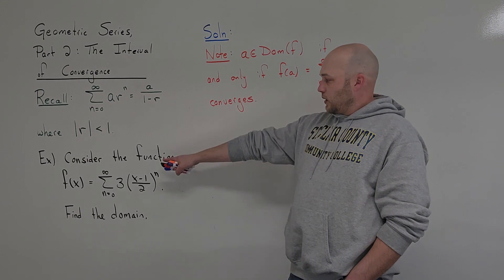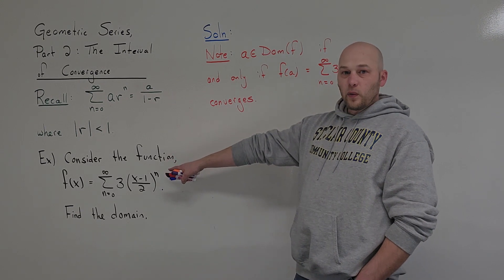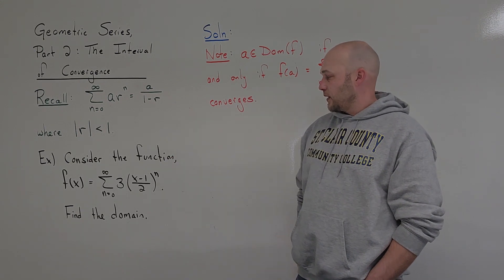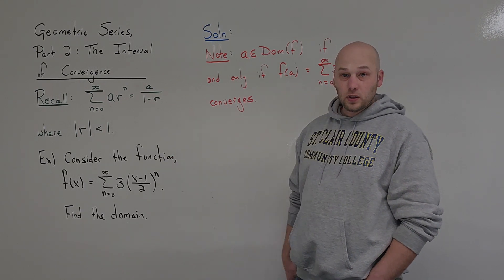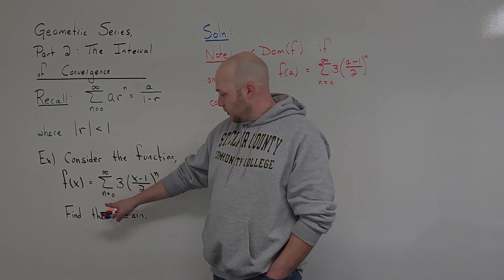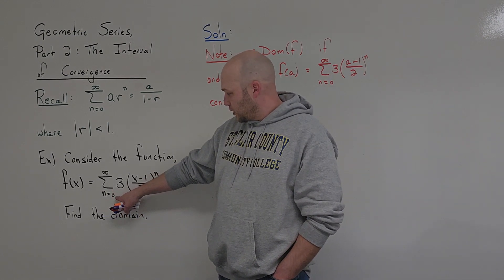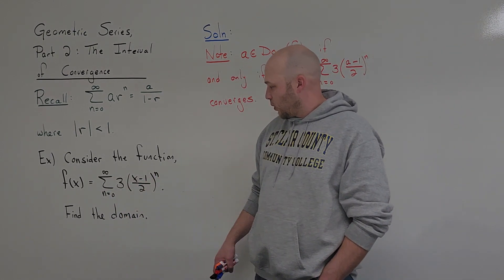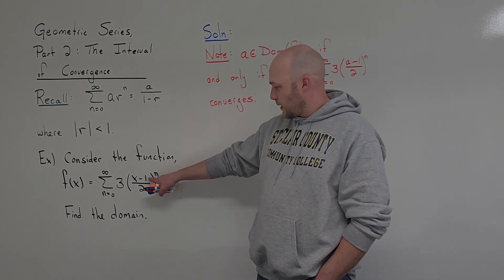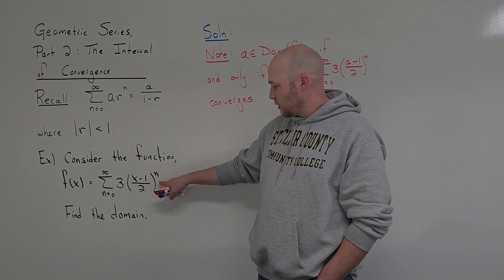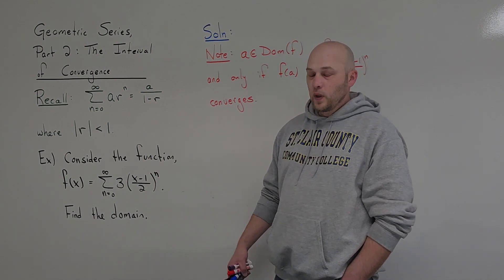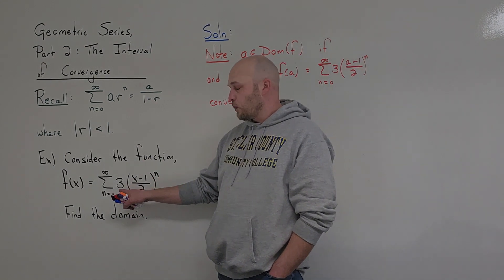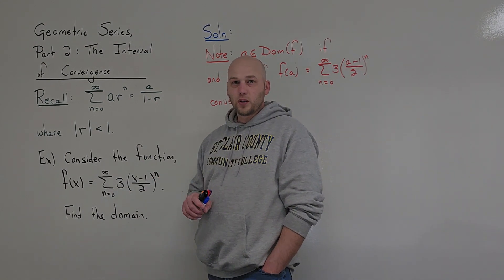What I want to do is consider the following function defined as a geometric series. f(x) is equal to the sum from 0 to infinity of 3 times the quantity (x minus 1) over 2, to the nth power. I want to find the domain of this function.